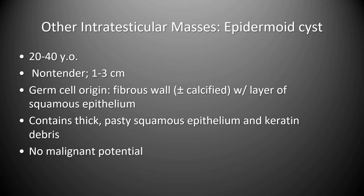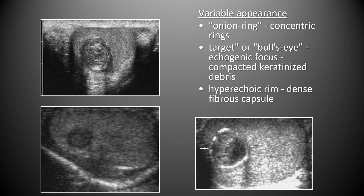The epidermoid cyst typically presents around 20 to 40 years of age as a non-tender 1 to 3 cm lesion. It is of germ cell origin with a fibrous possibly calcified wall containing squamous epithelium and keratin debris, and has no malignant potential — allowing interval surveillance or testicular-sparing surgery. On ultrasound, the most characteristic appearance is the onion ring pattern with concentric rings of hyper- and hypoechogenicity; a target/bullseye echogenic focus or a hyperechoic rim due to dense fibrous capsule are also seen.